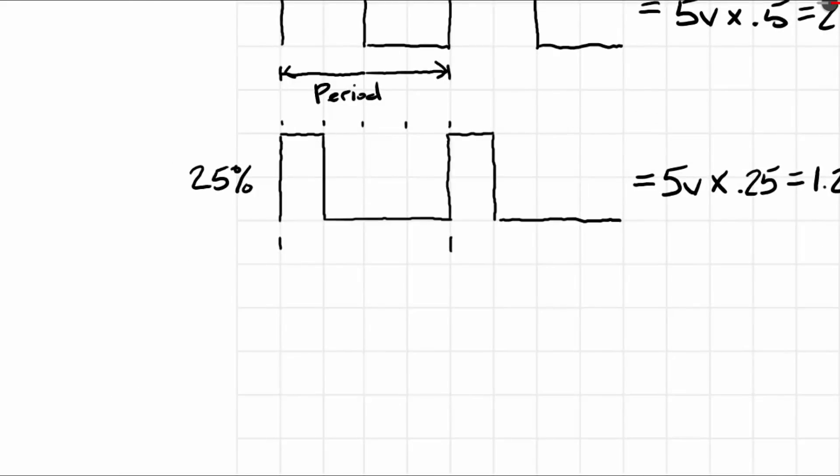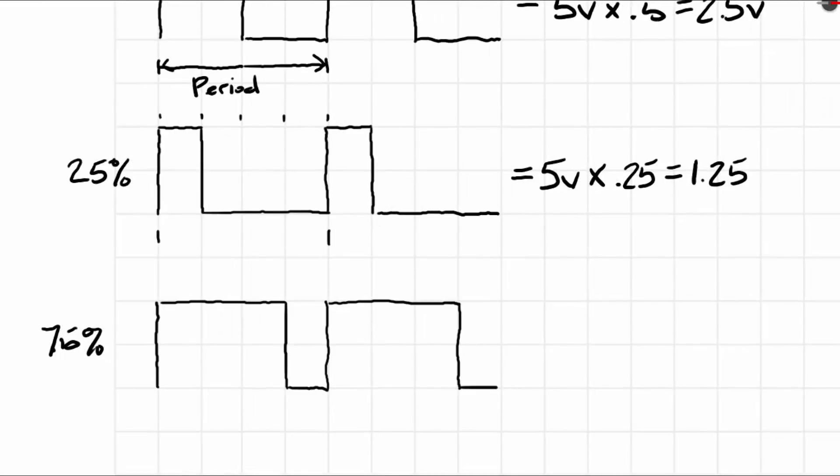Another example would be 75%. This would equal 5V times 0.75, which is equal to 3.75V.